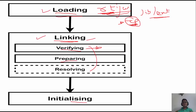The second sub-phase of linking is the prepare phase. In the prepare phase, all class data variables or instance variables are initialized to their default values. For example, if you have a variable declared as 'public static boolean something = true', in the prepare phase the variable 'something' will be initialized to false — the default value of boolean — not its actual value of true.